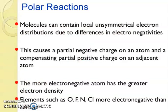Now friends, polar reactions. Molecules can contain local unsymmetrical electron distribution due to differences in electronegativity. And this causes a partial negative charge on an atom and compensating partial positive charge on an adjacent atom. The more electronegative atom has the greater electron density.